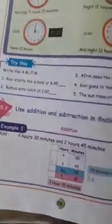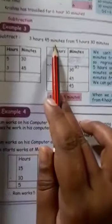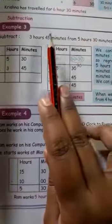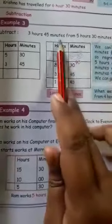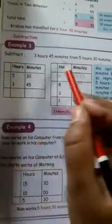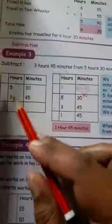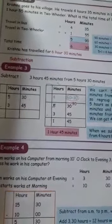So the answer is 7 hours 15 minutes. Now we have to do subtraction. Take page number 77. Subtract 3 hours 45 minutes from 5 hours 30 minutes. We write hours and minutes in columns: 5 hours 30 minutes, minus 3 hours 45 minutes. We cannot subtract 45 minutes from 30 minutes — it is not possible.